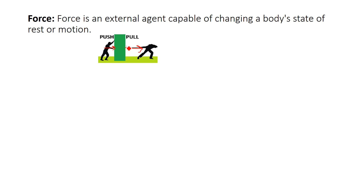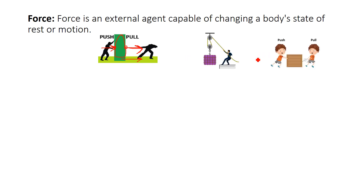In pull type of force, the force is going away from the point of application. In push type of force, force is coming toward the point of application. For example, considering the green color block, it shifts from one position to another after pulling or pushing. Any external agent changing the state of a body is called a force. Examples include pulling a rope or pushing and pulling a block.